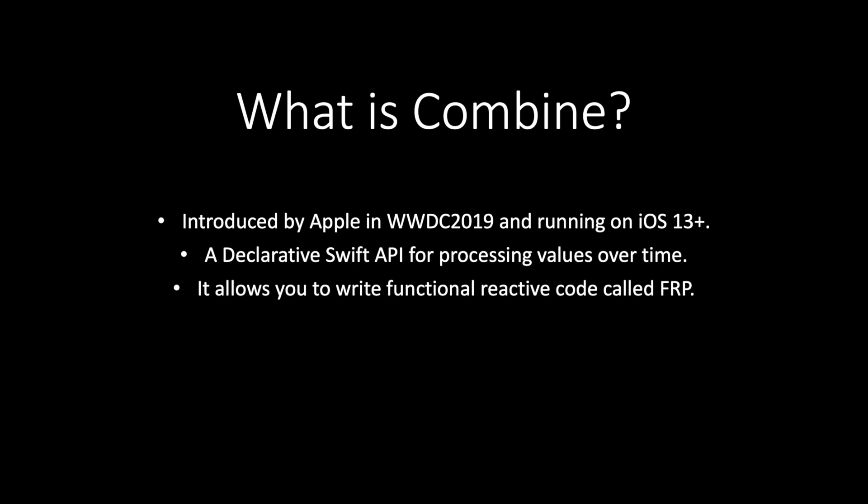So what does declarative mean here? In declarative programming we are focusing on the outcome rather than how we reach that outcome. Just as an example, if you have booked a taxi you are just going to tell the destination to the driver. You are not going to tell how to reach that destination — you are not going to tell the driver to take a left turn or a right turn. The driver will take you to the destination itself. In a similar way, a declarative Swift API processes values over time.